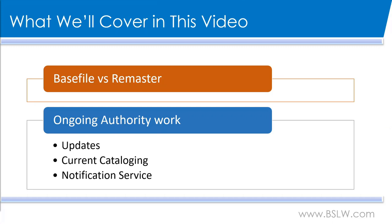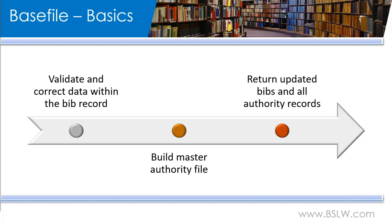The overview I am giving is relatively brief, so I am planning future videos that will go into more detail. Let's first talk about our base file service, which is our core retrospective service for authority control. The base file includes many global edits and enrichments to your bibliographic records, as well as building a new authority file which we call an auth master.